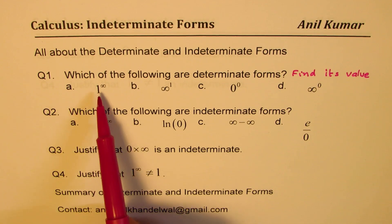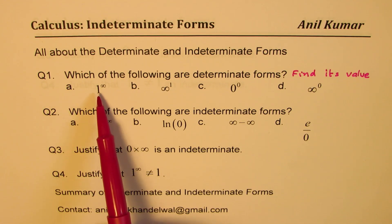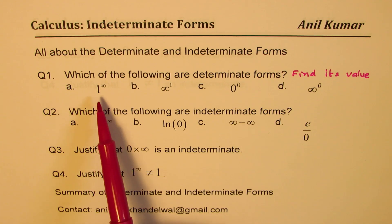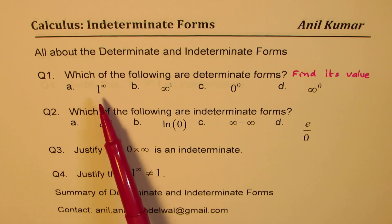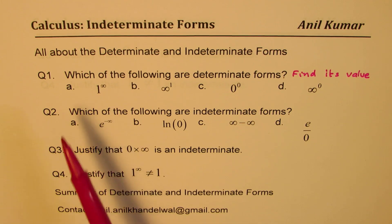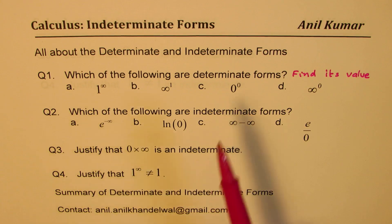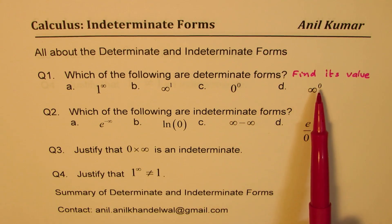So, 1 over infinity. Now you may say one to the power of anything is one, but one to the power of infinity — are you sure it will be one? That is the question. That's why we categorize this into indeterminate forms. Infinity to the power of one, zero to the power of zero, or infinity to the power of zero.